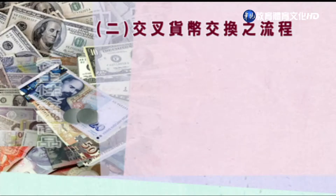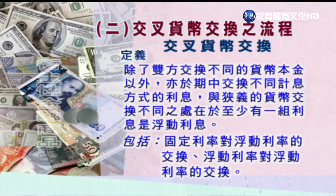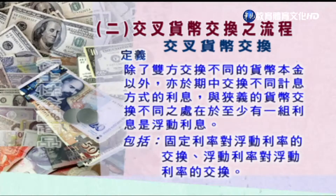接着来看有涉及到浮动利率计息的货币交换，称为交叉货币交换它的流程。所谓的交叉货币交换，定义是双方交换不同的货币本金以外，也在期中交换不同计息方式的利息，与狭义货币交换不同的地方在于有一组的利息涉及到浮动利率。其中包括固定利率对浮动利率的交换，还有浮动利率对浮动利率的货币交换。以下用一个图形，带同学认识固定利率对浮动利率交叉货币交换的例子。